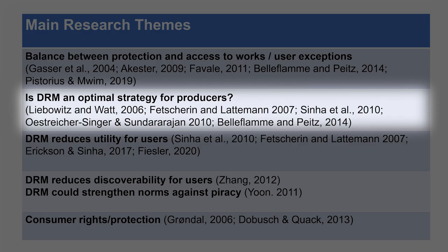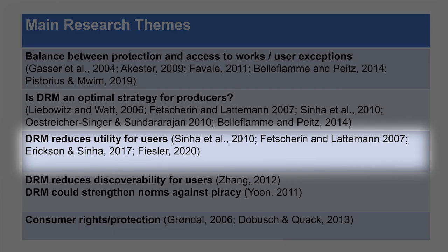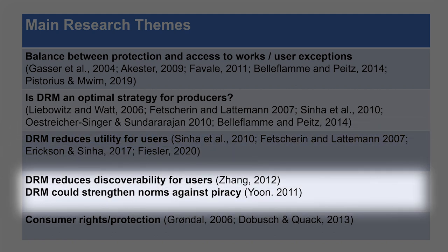Over the course of a day, I was able to go through and read each of those studies and start developing some overview findings. A major theme is the balance between protection and access to works and how that interferes with user experience and user exceptions. On the question of effectiveness, a good number of studies ask whether DRM is an optimal strategy for content producers and rights holders. The majority of findings seem to suggest that overabundance or overly strict DRM reduces value and utility for users.